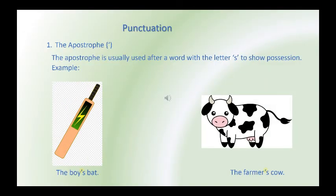Use of apostrophe in a sentence. The apostrophe is usually used after a word with the letter s to show possession. Example: The boy's bat. Here, after the word boy, apostrophe and s is used to show the possession. The farmer's cow, after the word farmer, apostrophe is used and an s to show the possession.